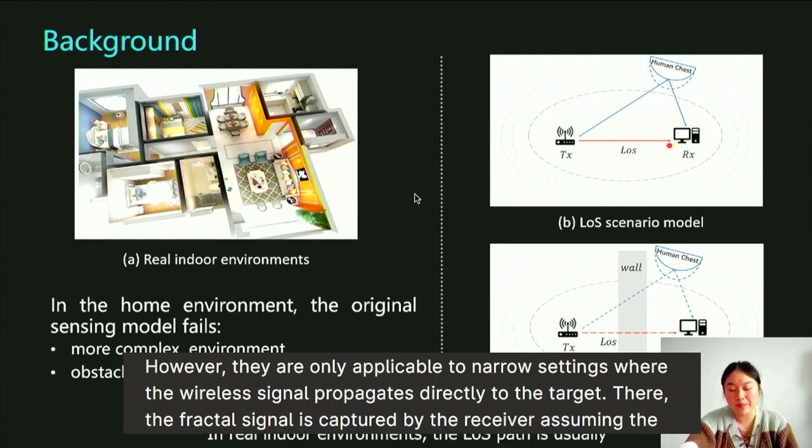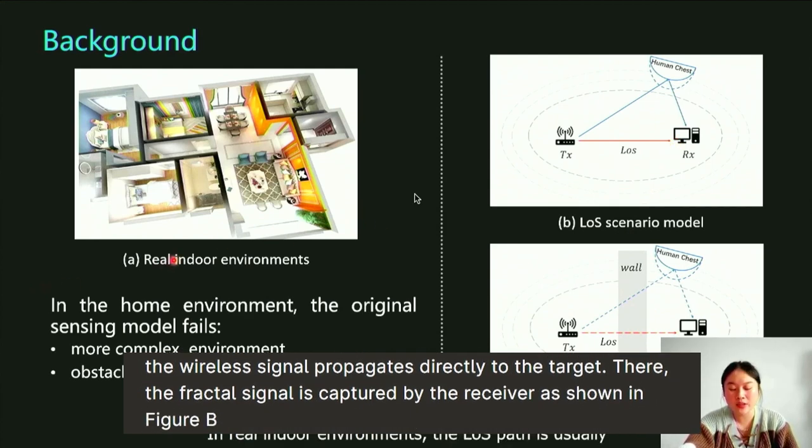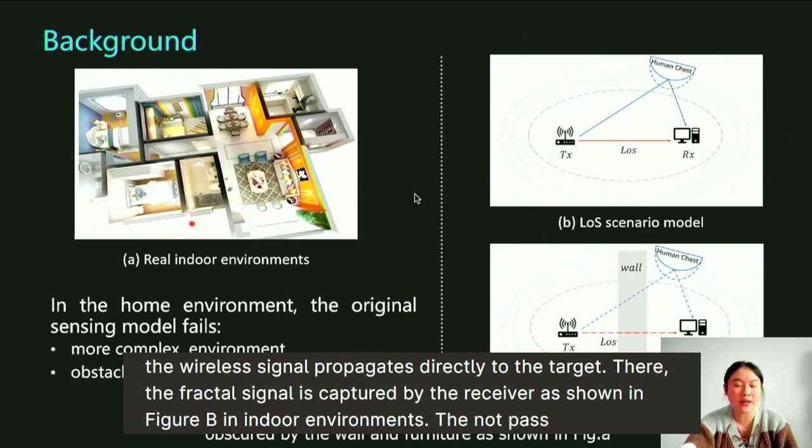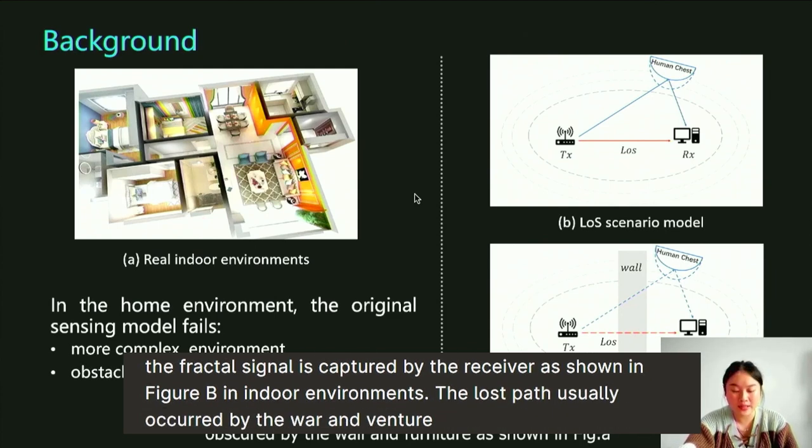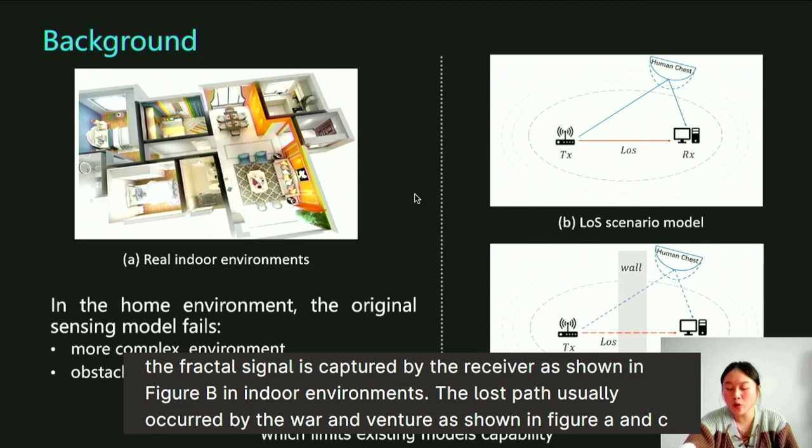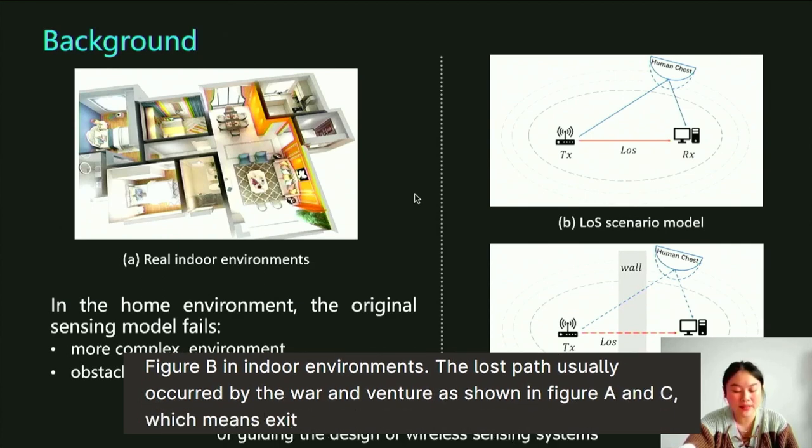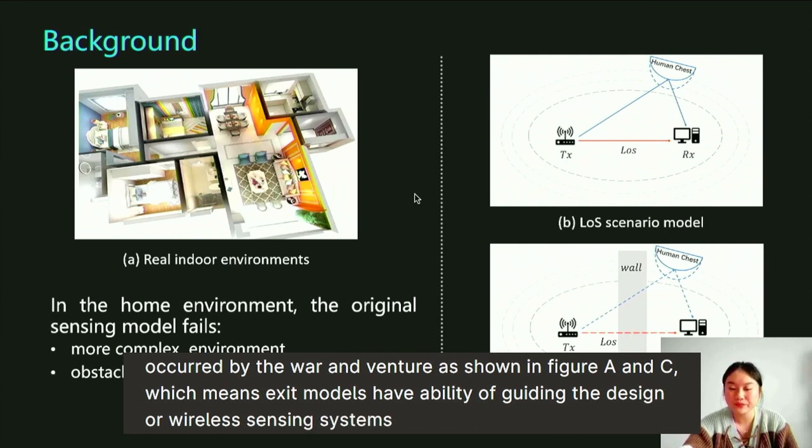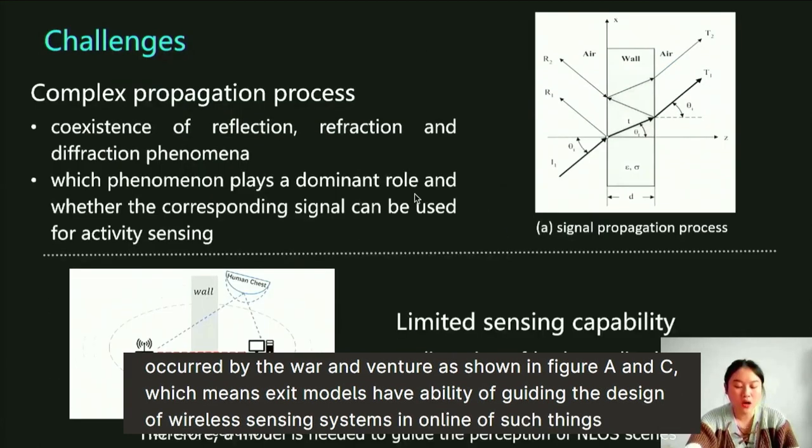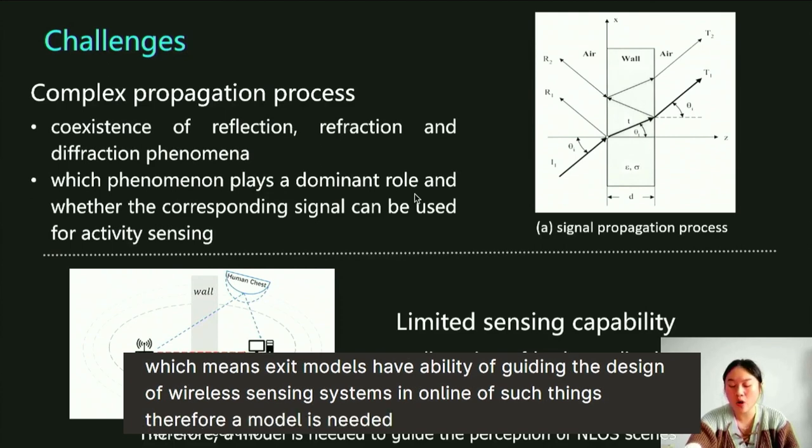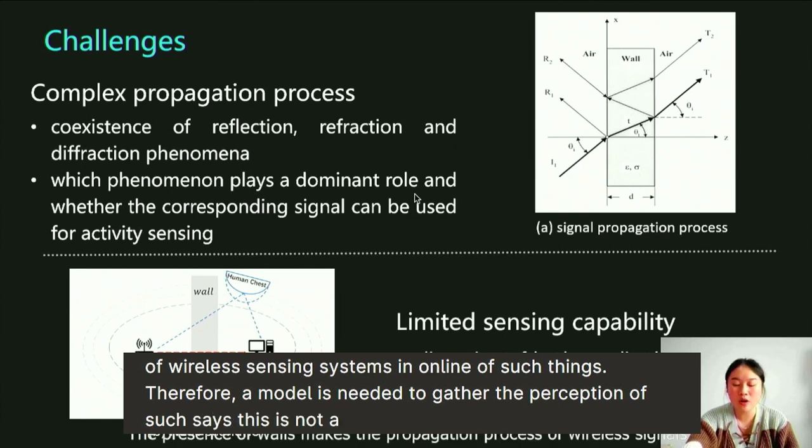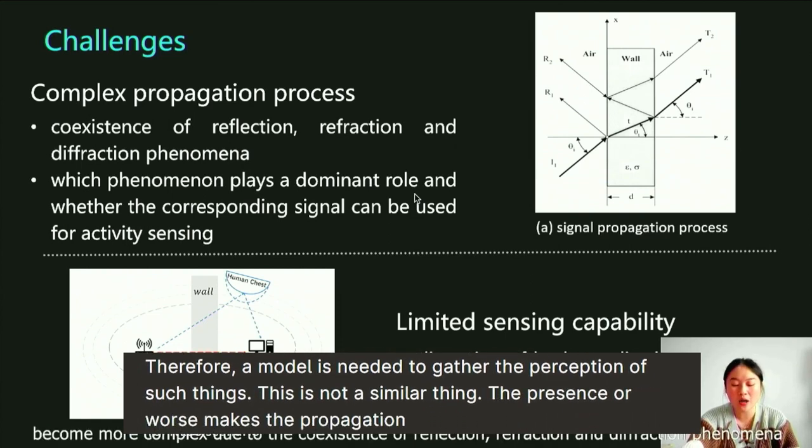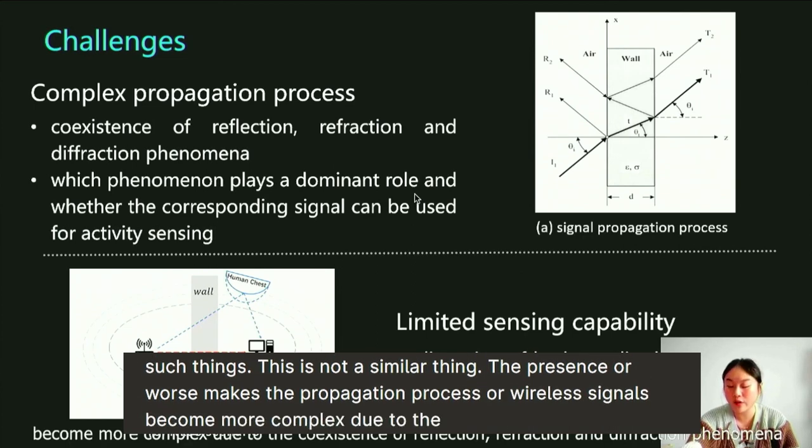In real indoor environments, the line-of-sight path is usually obstructed by walls and furniture, as shown in figures A and C, which means existing models lack the capability of guiding the design of wireless sensing systems in non-line-of-sight scenes. Therefore, a model is needed to guide the perception of non-line-of-sight scenes. This is not a simple thing.